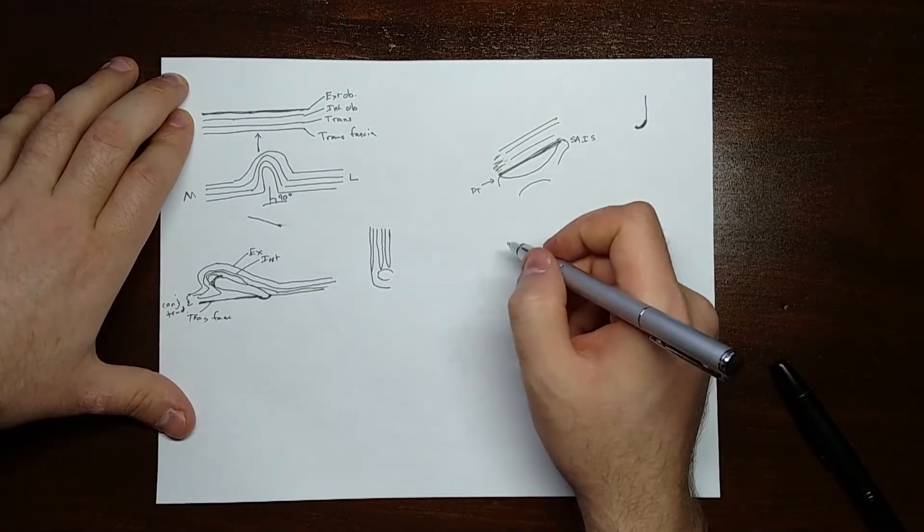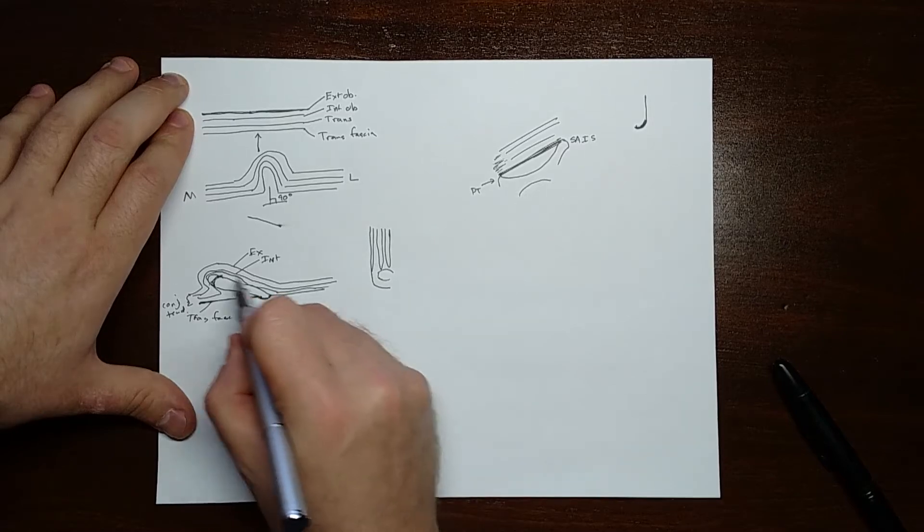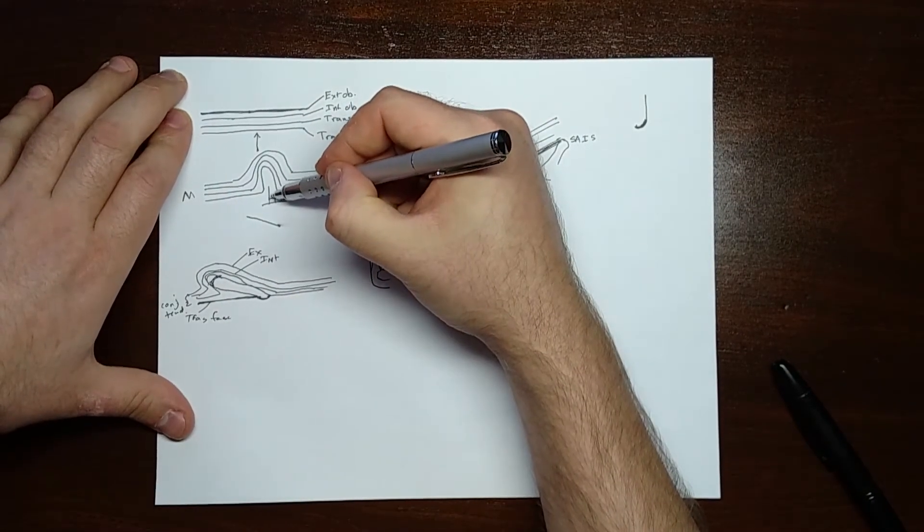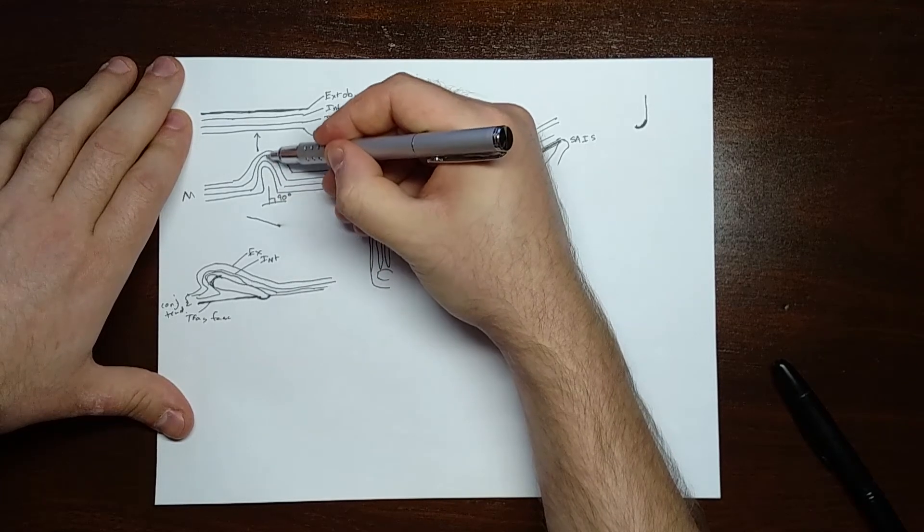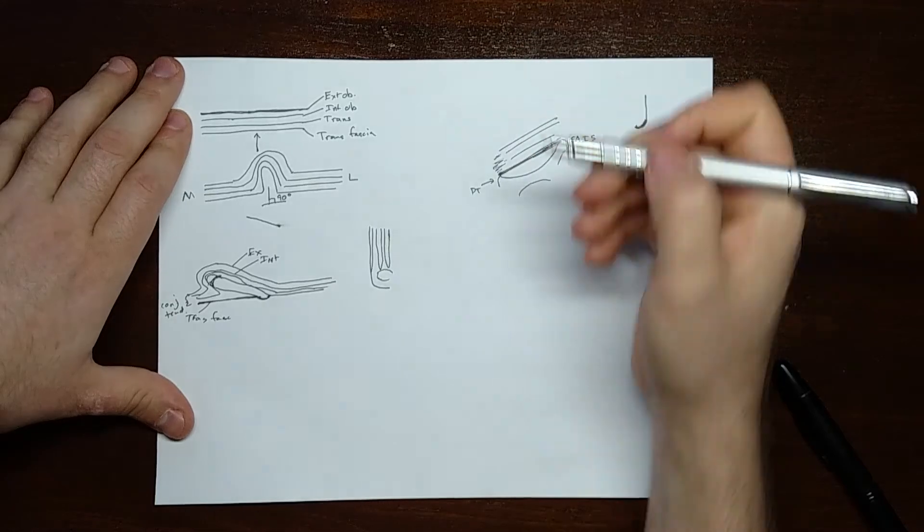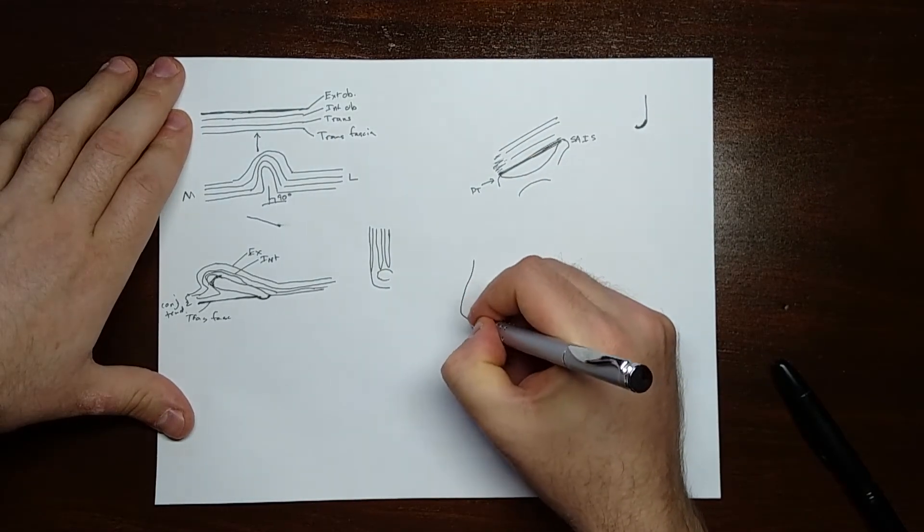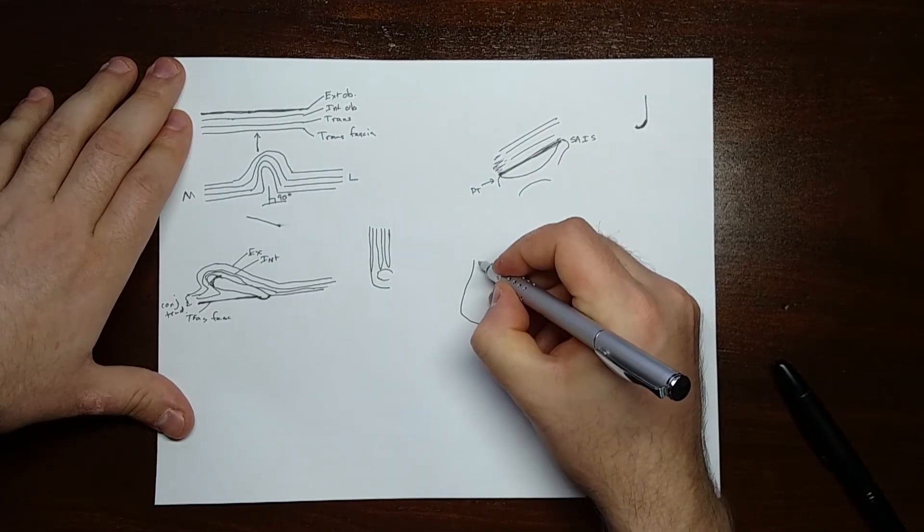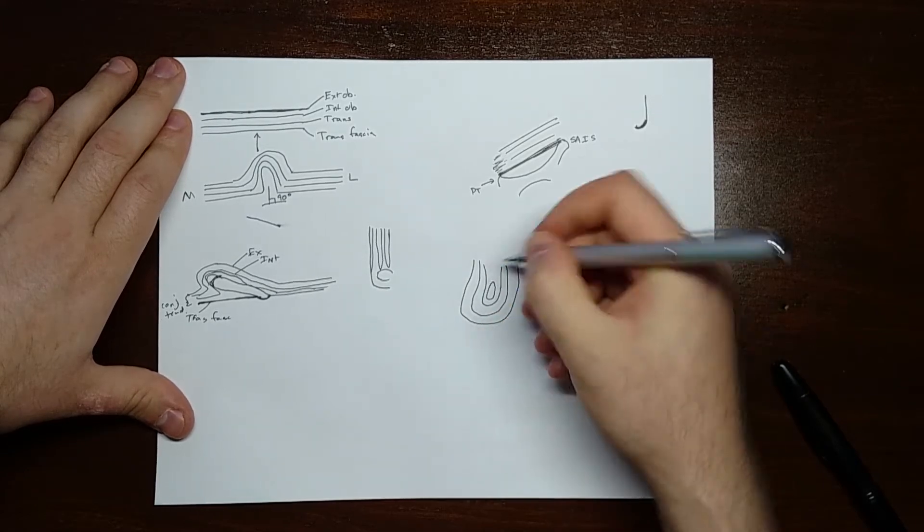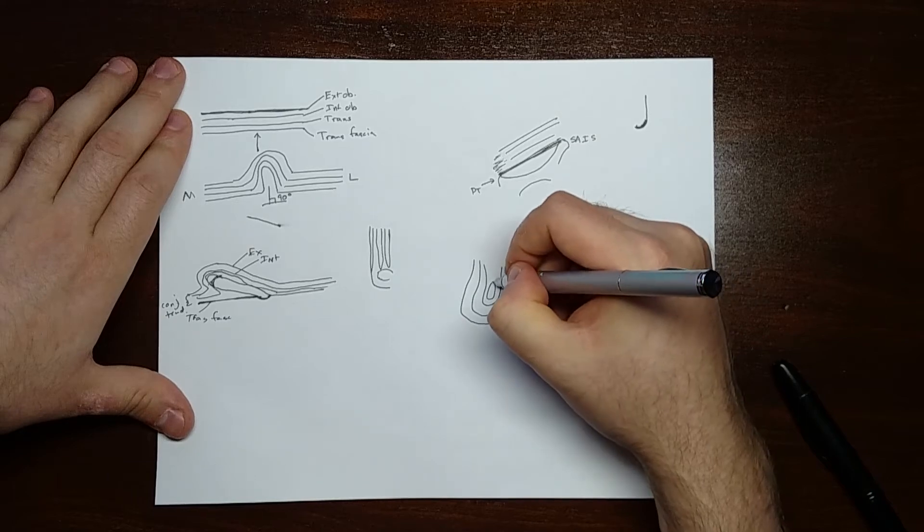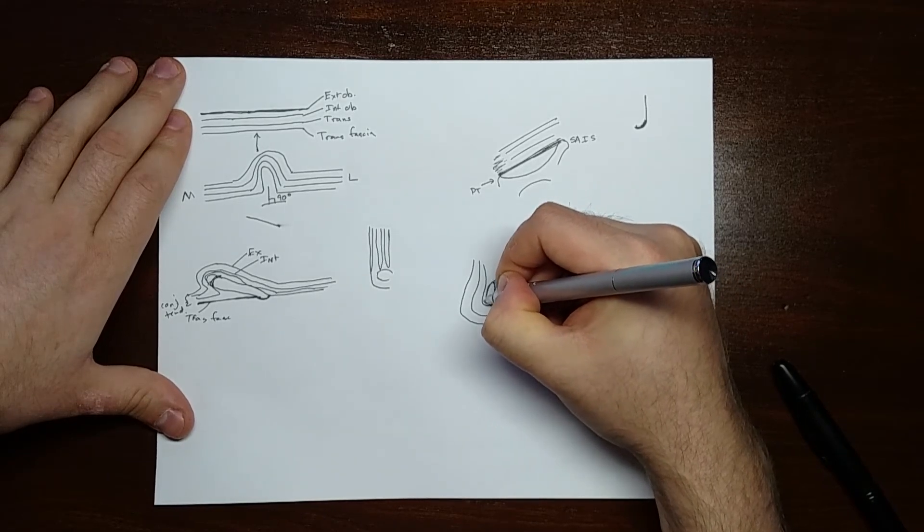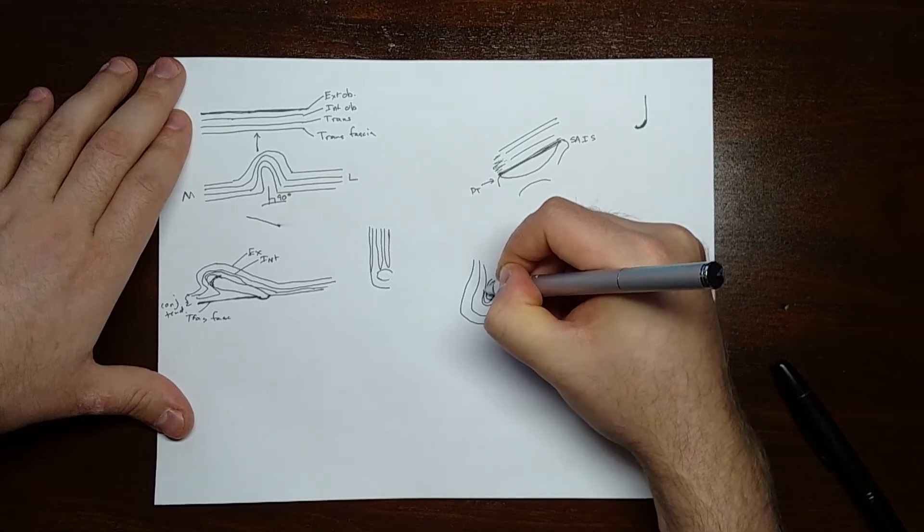You always got to remember that none of these layers ever disappear. They just become something else. Because, like in a hernia, all the layers get taken with it as they pouch out. If you can imagine the testicle in the scrotum, all the layers are still there. Except the testicle kind of rides outside the processus vaginalis and is wrapped up in it, like that.